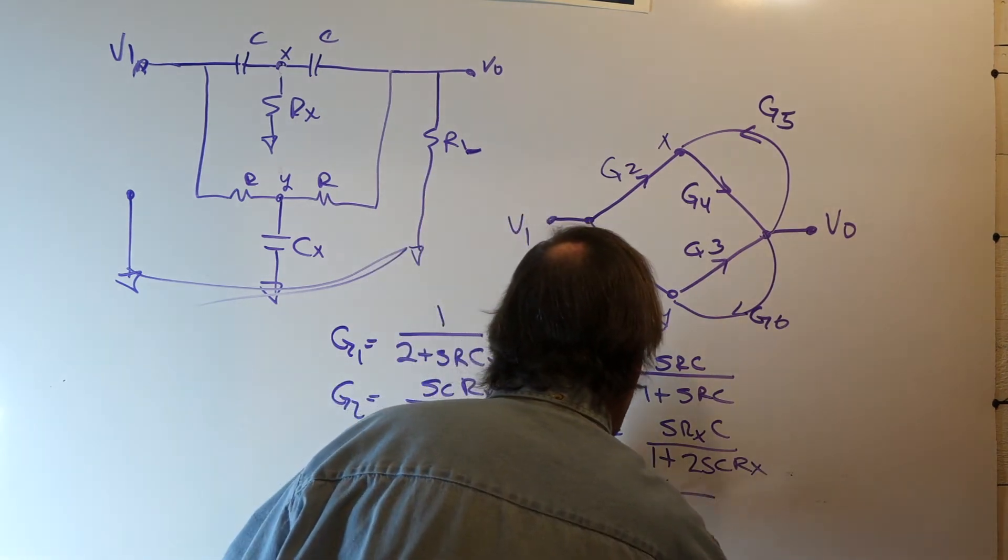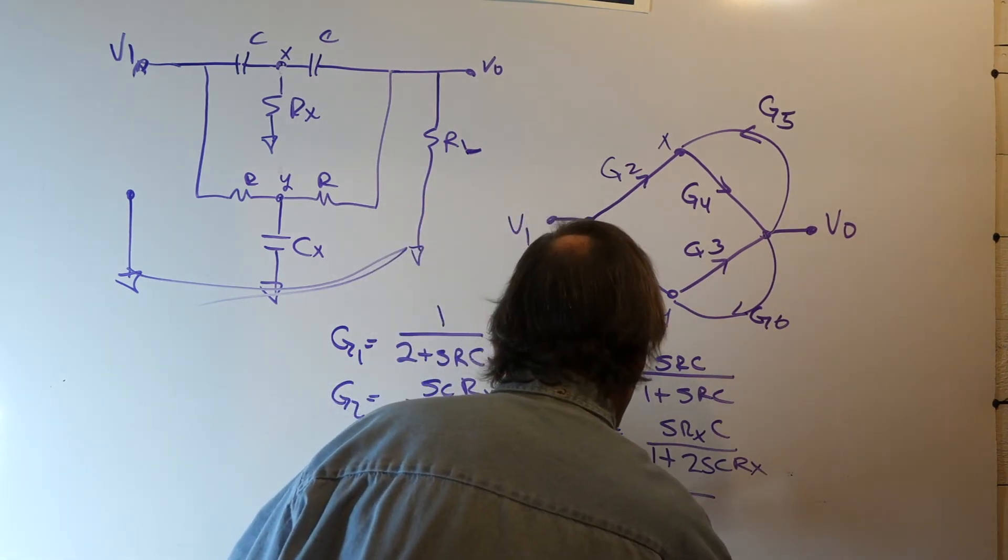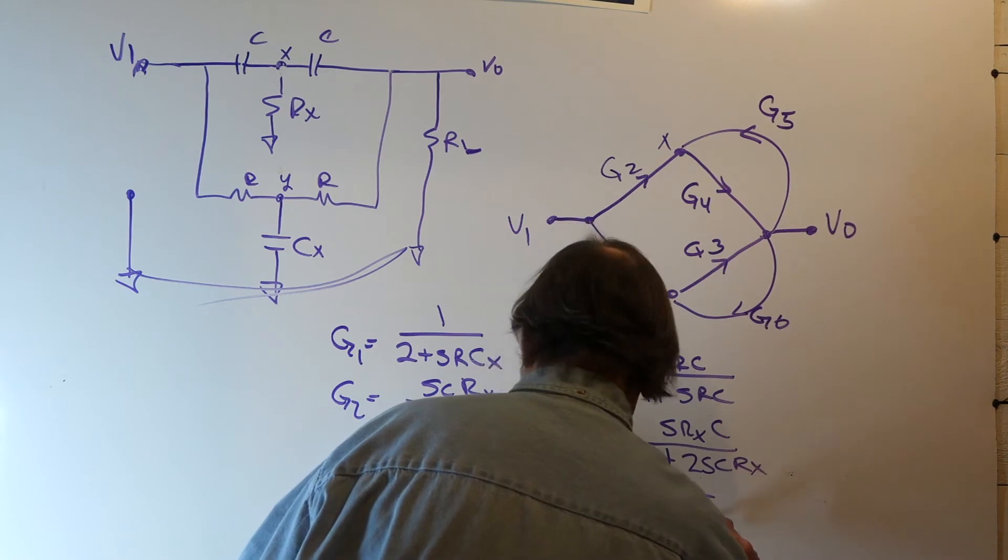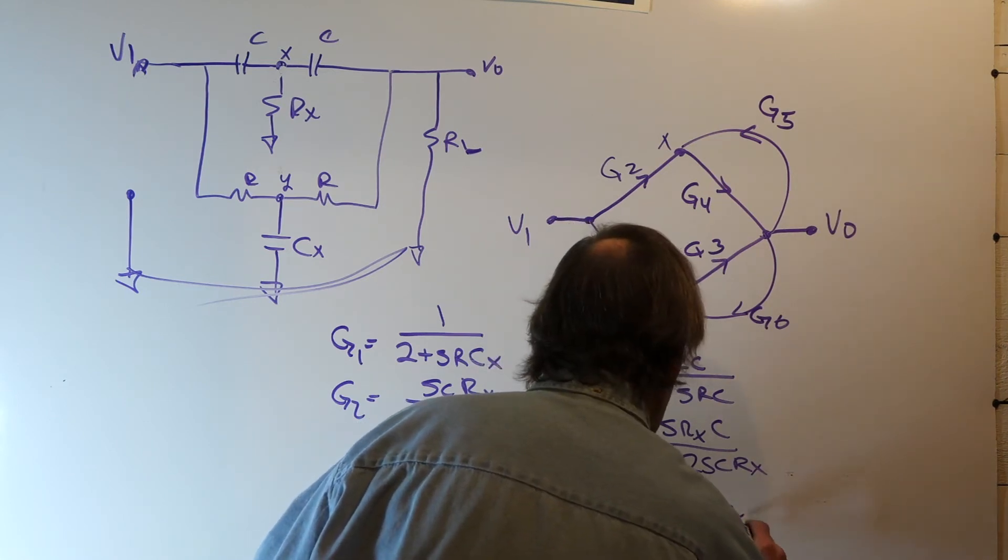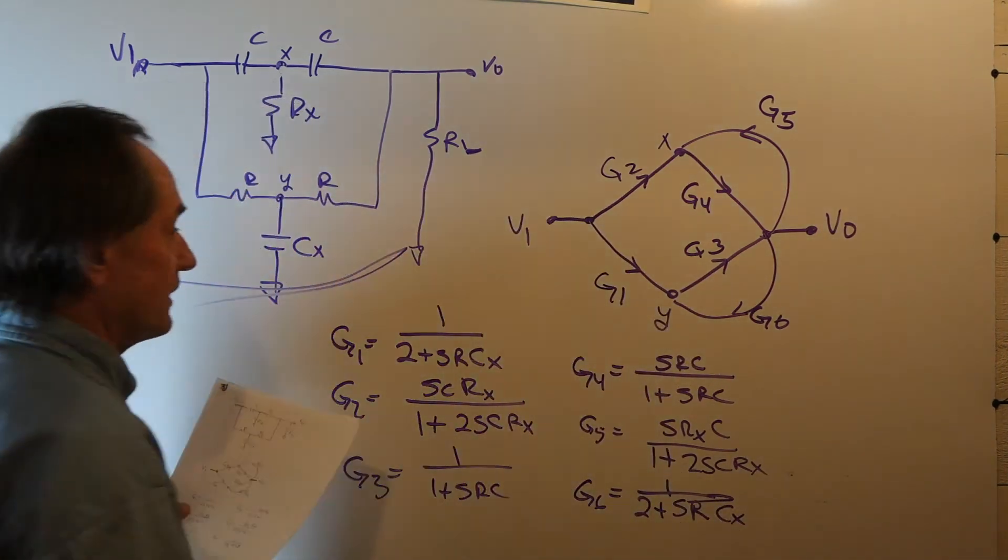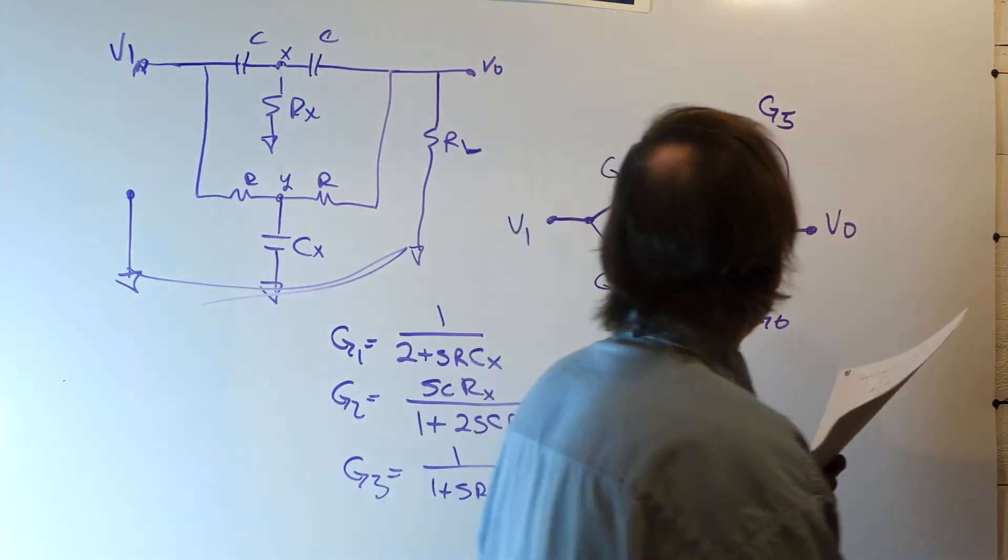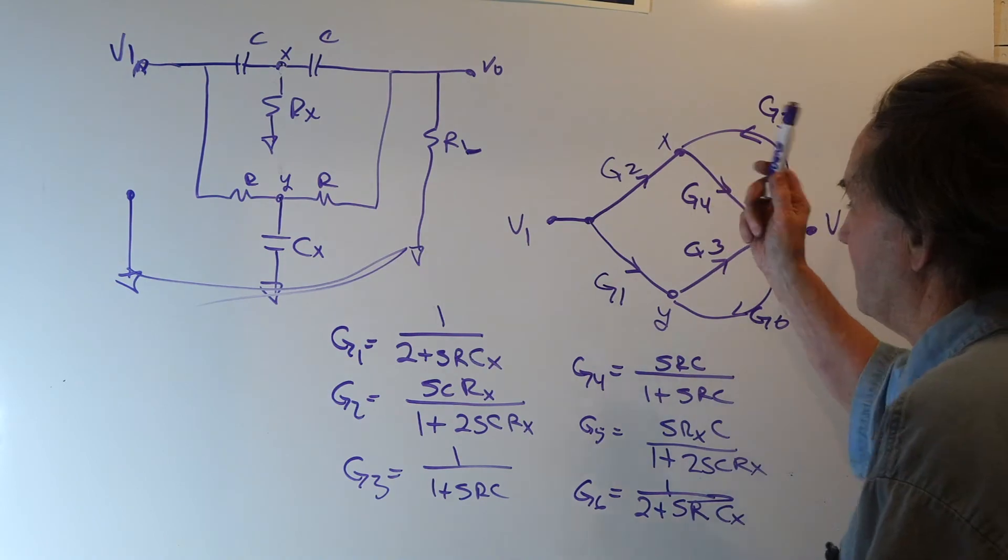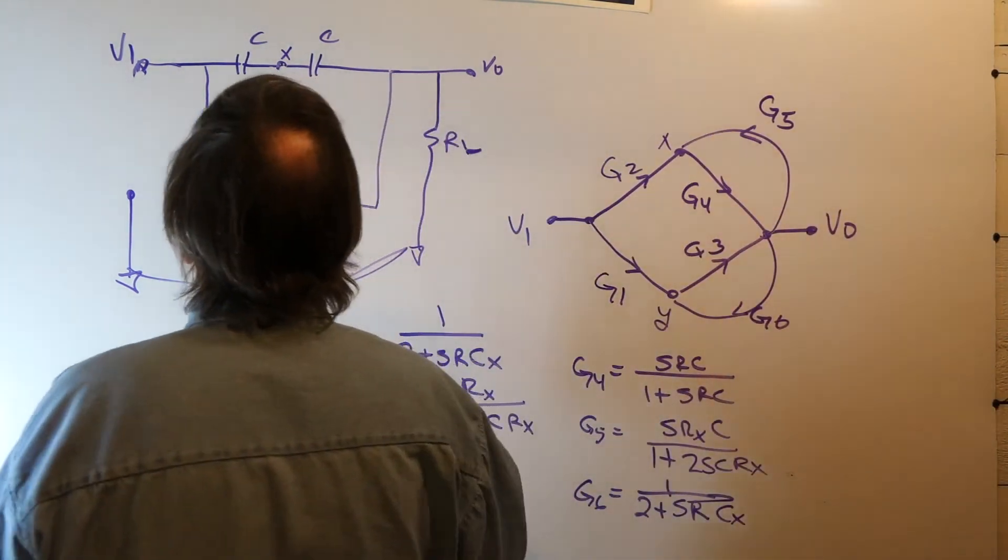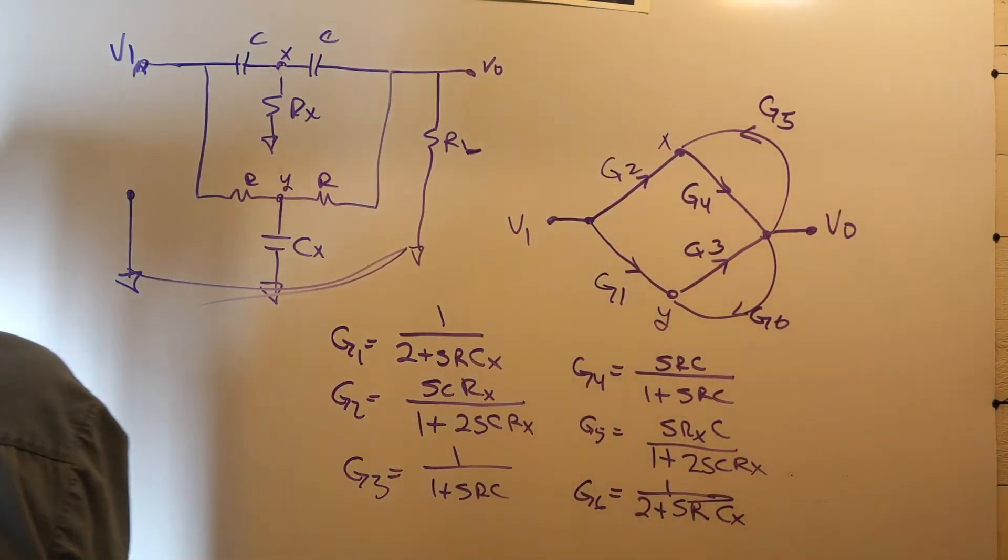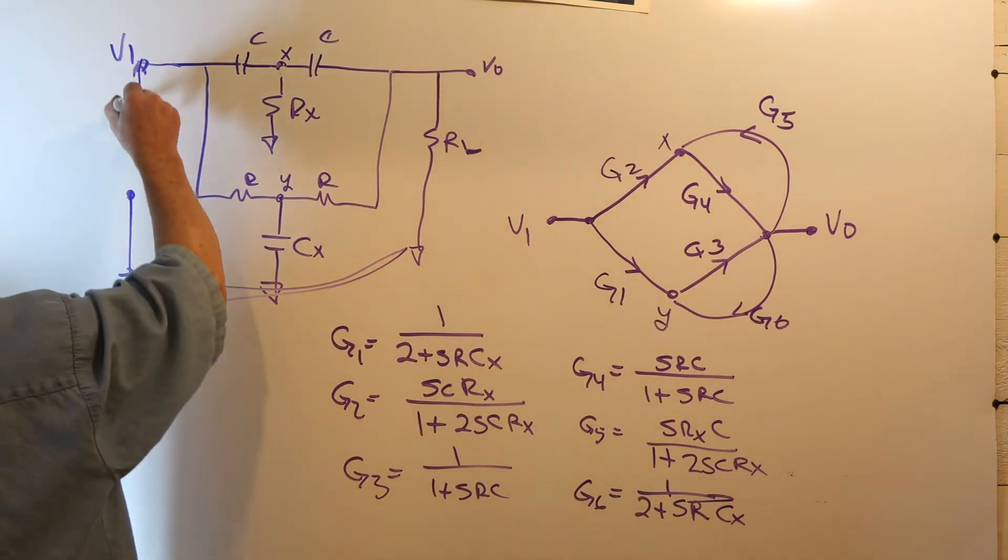gain 5 is SRX over 1 plus 2SCRX. Wait, 1 over 2 plus SRCX. So those are your six gains for the flow graph and you can use Mason's gain formula for getting the transfer function to check with what you got. This is AC voltage source here or V1.